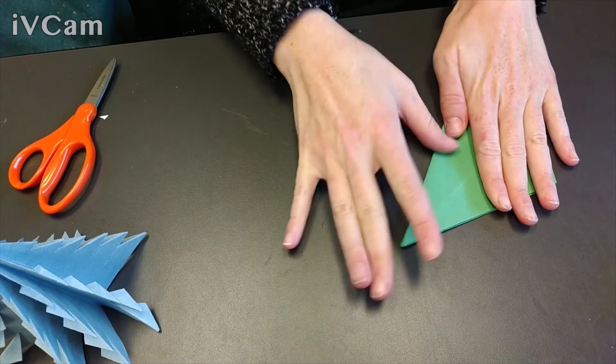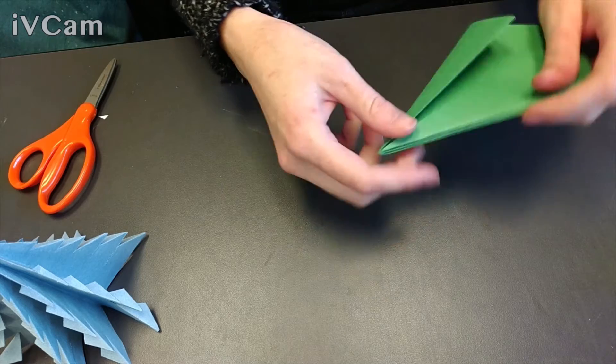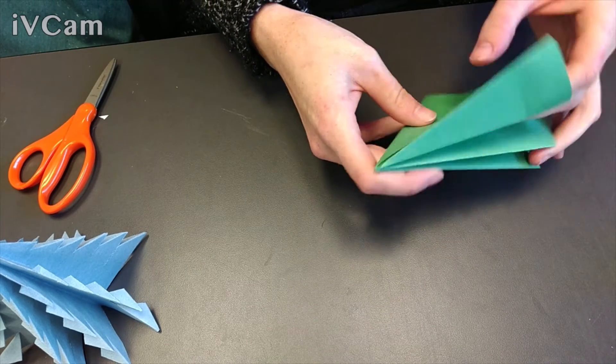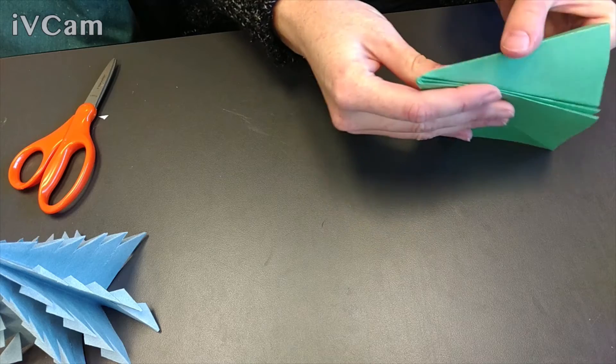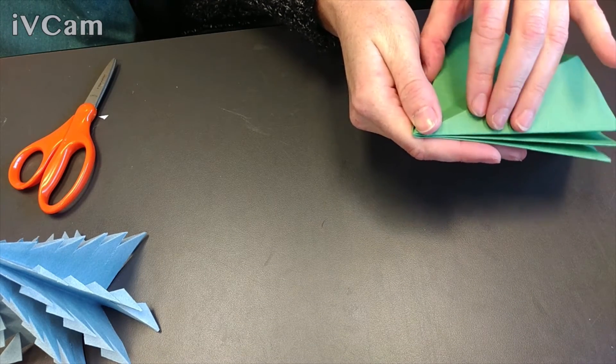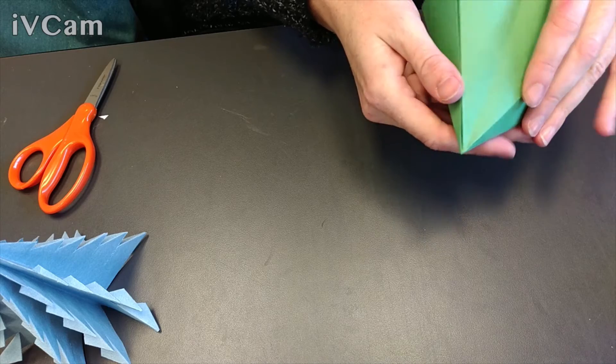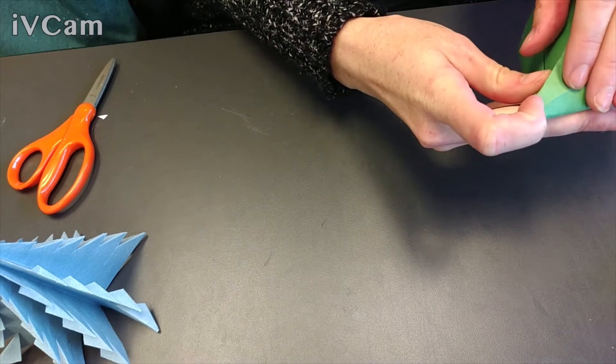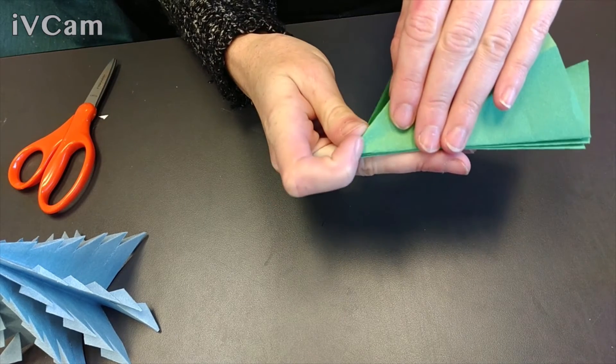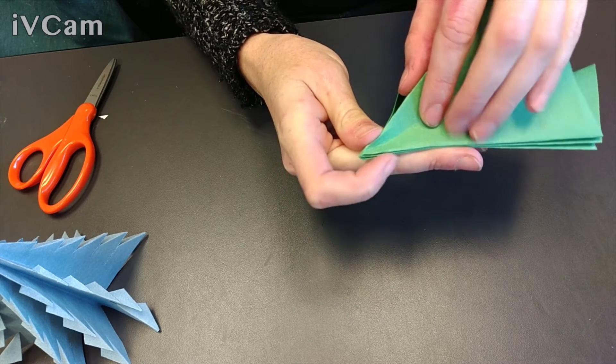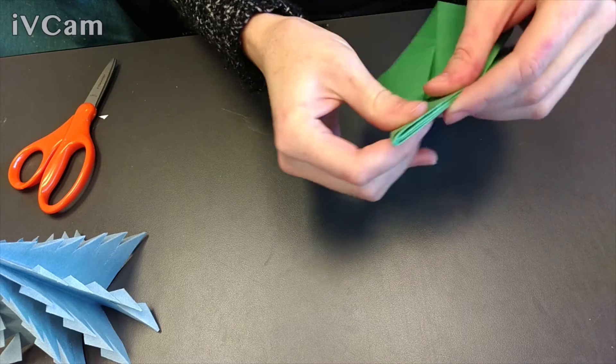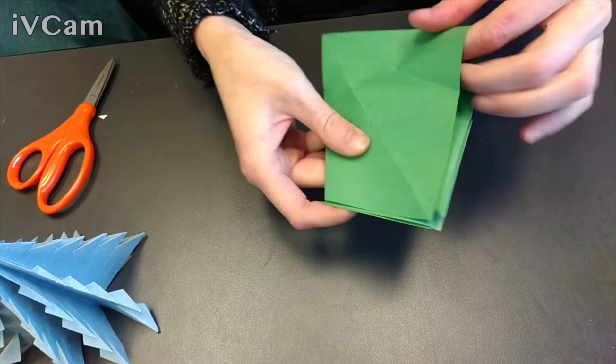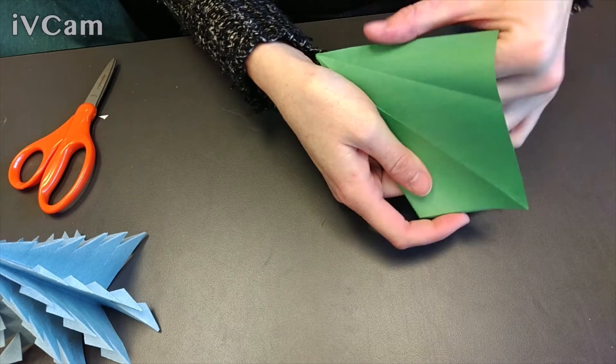Now we're going to turn it over and do the same thing on the other side. So if you ever have trouble doing anything, we do things multiple times. So you can just wait and watch all the different times I do it, see the different ways I work with the paper, the different things I try. Because sometimes it just depends on the paper you're working with. It just depends on the folds. Sometimes it goes really easily. Sometimes it doesn't.